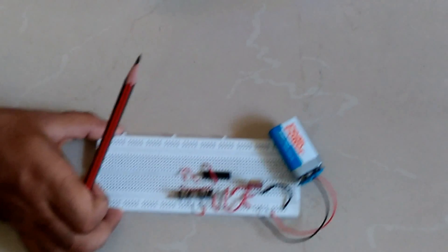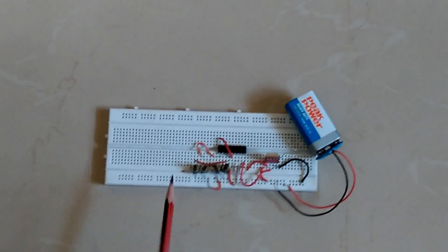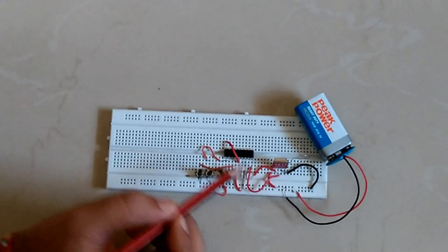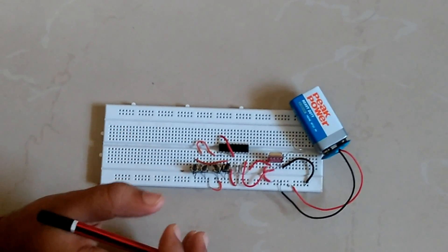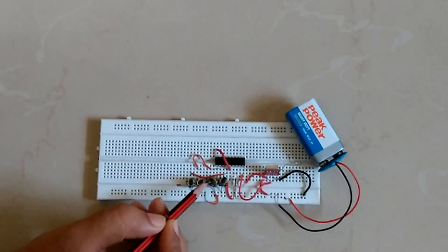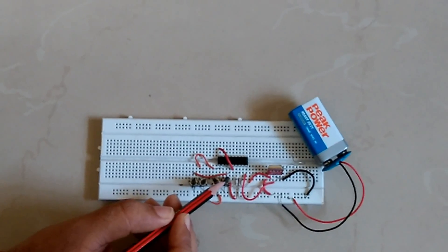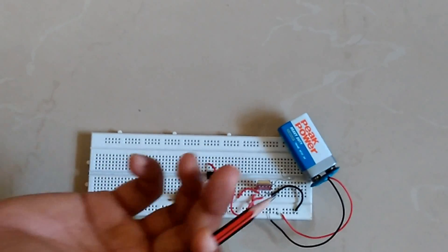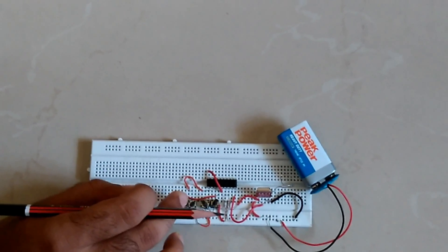Now let's start with our explanation part. First let's have a look at the remote. We have this encoder, so what encoder actually does is it encodes your data. We have these four switches and according to it you can give your digital inputs. When you press this it's on and when you leave it it's off.